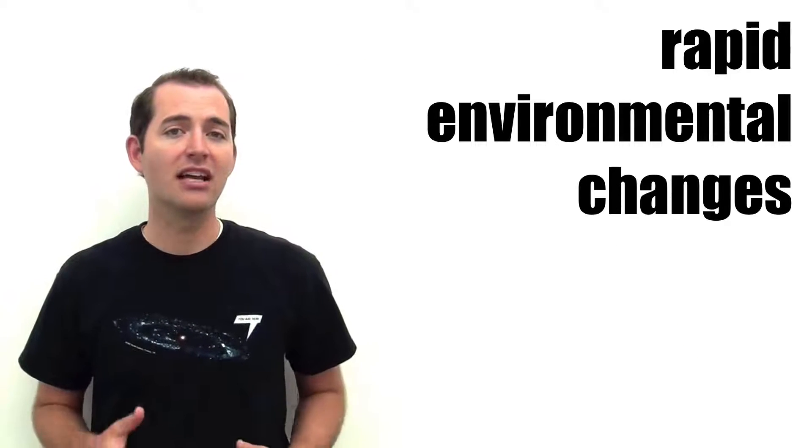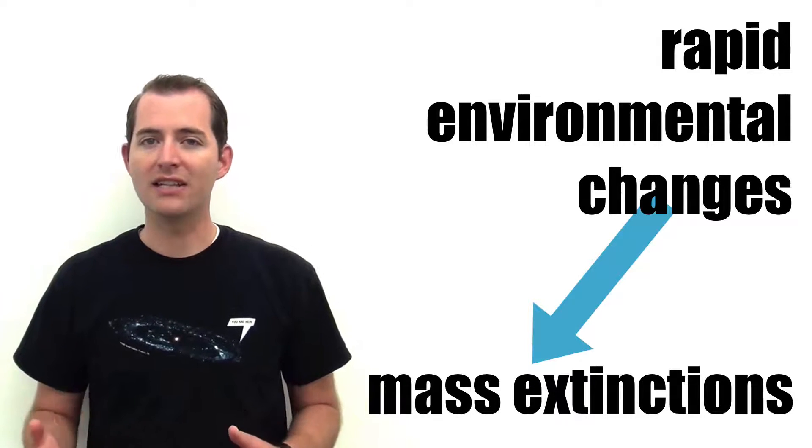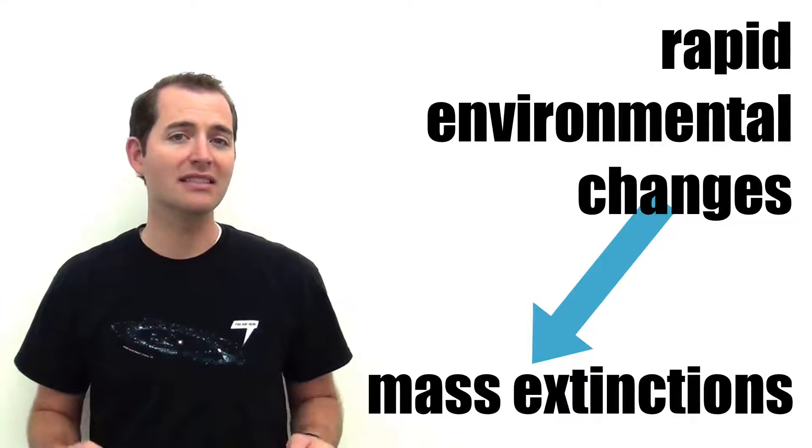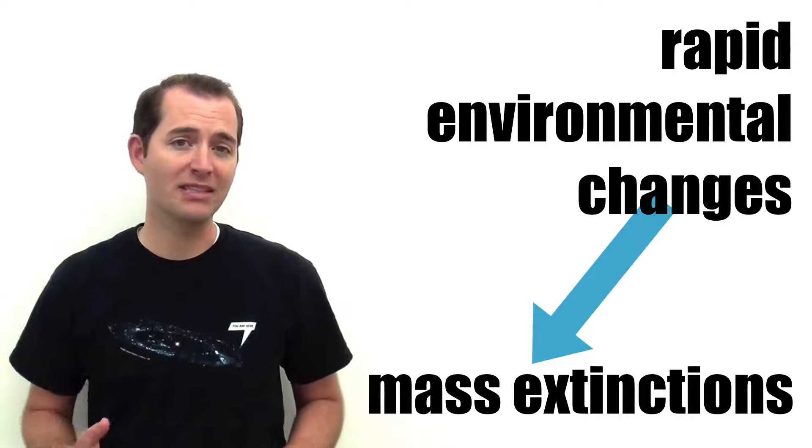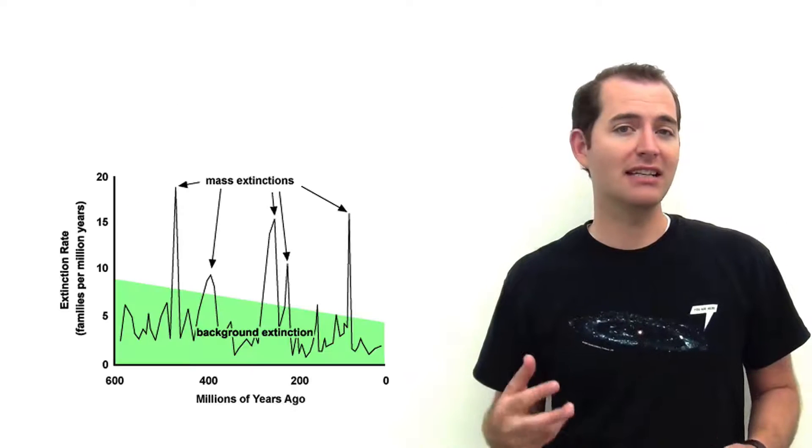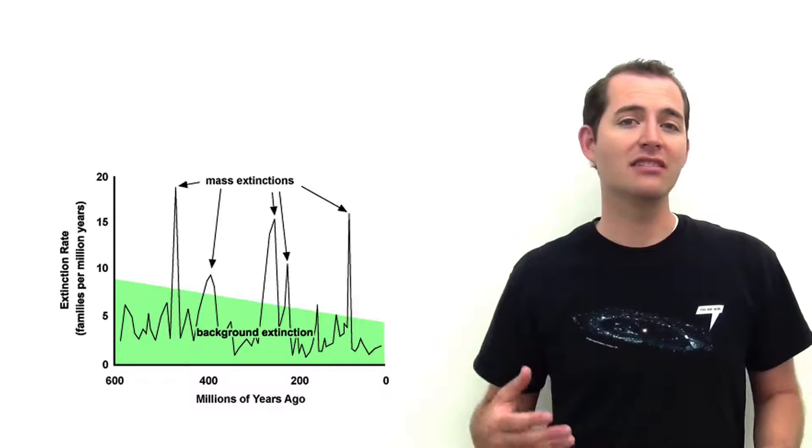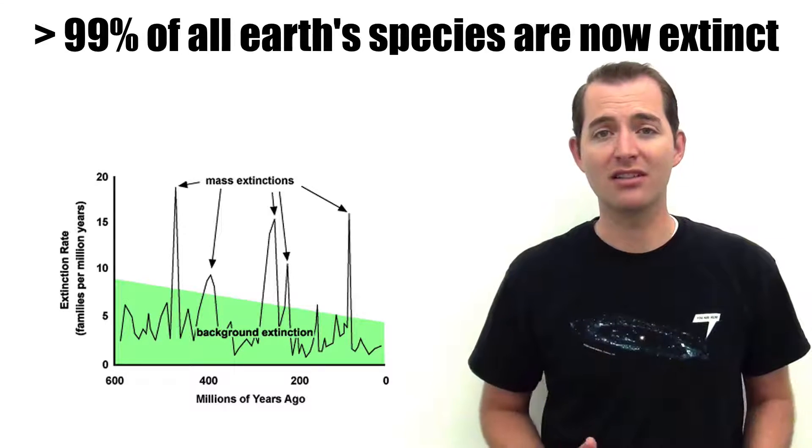An important point about biodiversity is that rapid environmental changes typically cause mass extinctions. Because of this, it's estimated that greater than 99% of all species that have lived on Earth—estimated to be more than 5 billion species—are currently extinct. Environmental changes in Earth's history have caused the extinction of greater than 99% of all species that have ever lived.